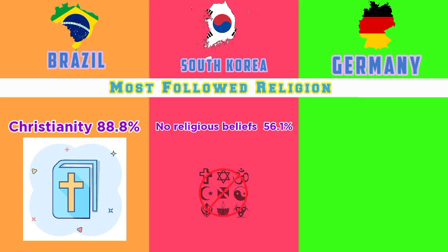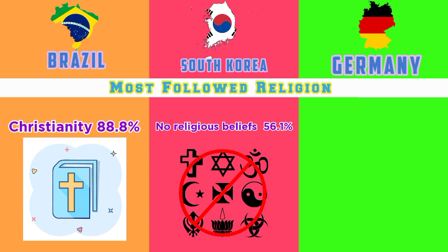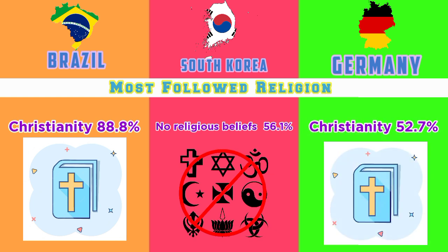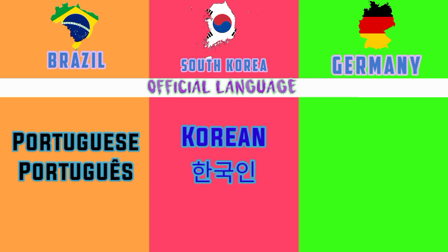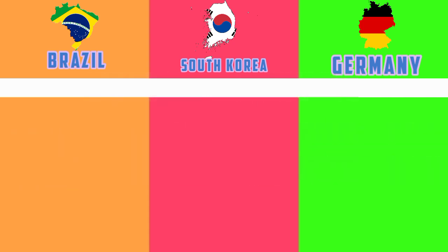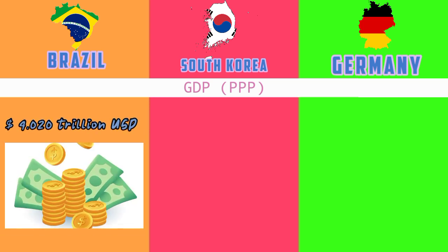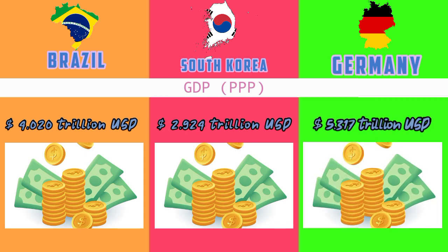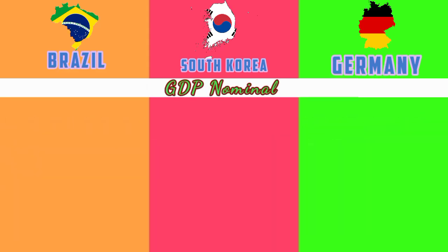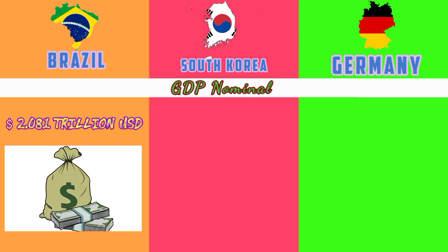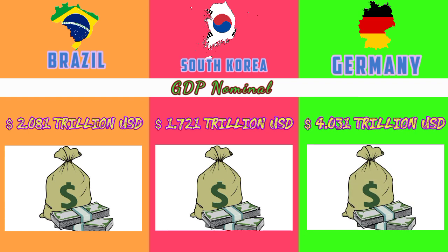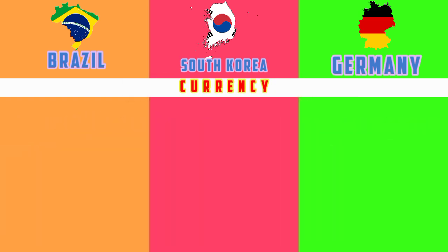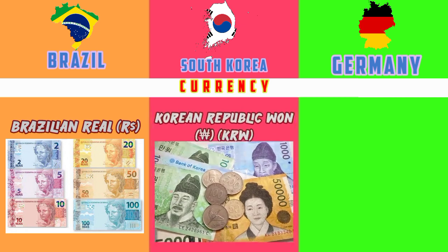Most followed religion: Brazil Christianity at 88.8 percent; South Korea no religious beliefs at 56.1 percent; Germany Christianity at 52.7 percent. Official language: Portuguese, Korean, German. GDP PPP: Brazil 4.020 trillion; South Korea 2.924 trillion; Germany 5.317 trillion.